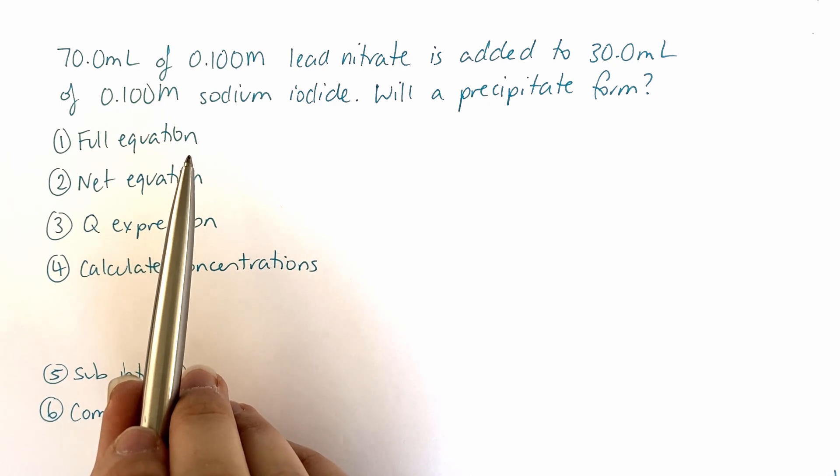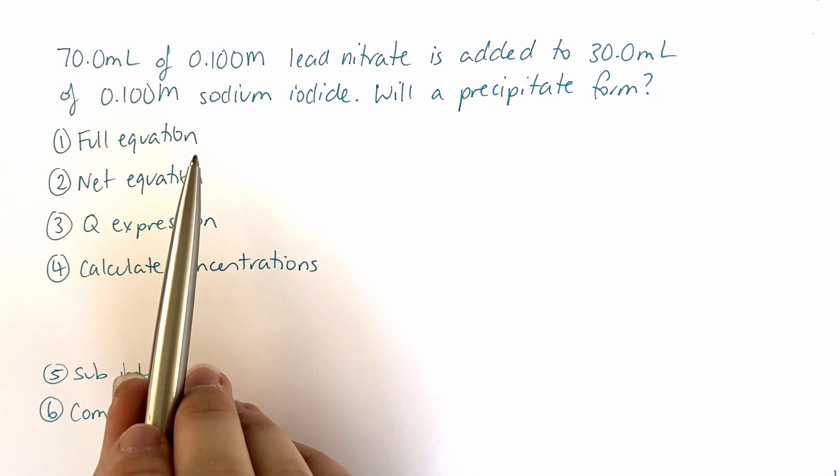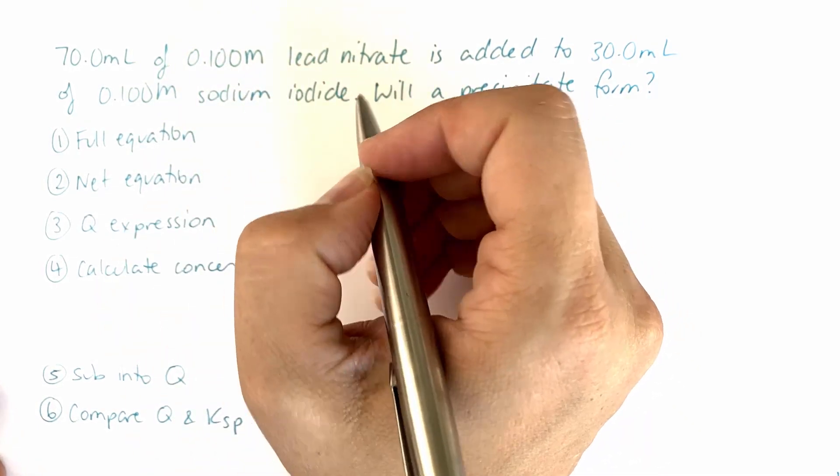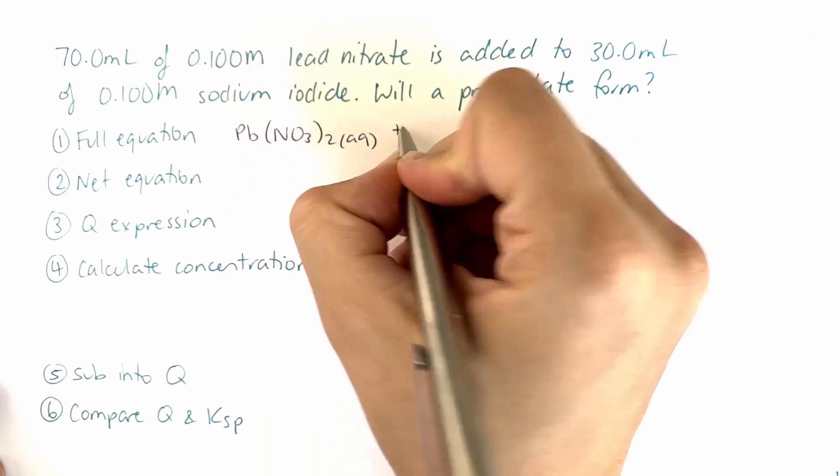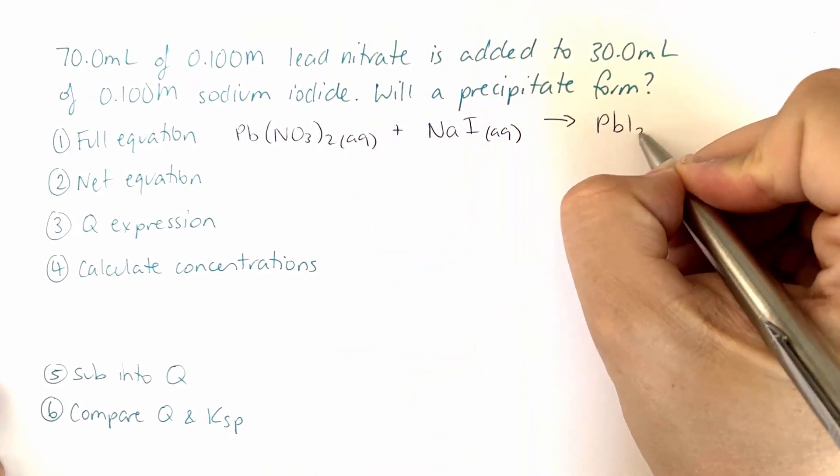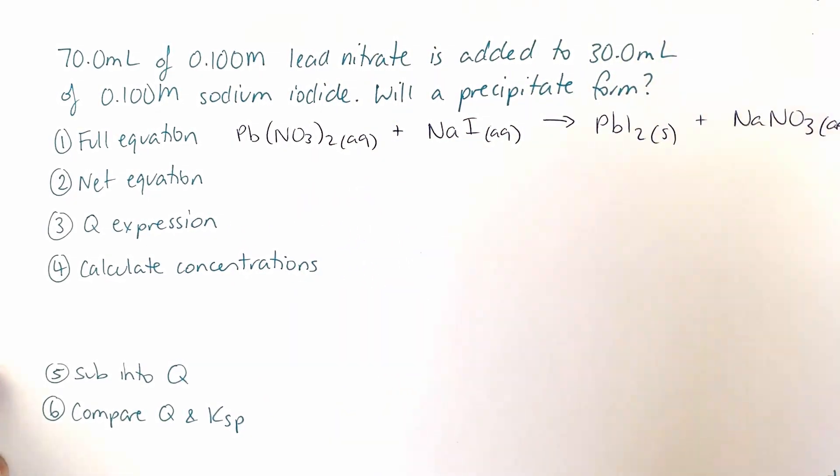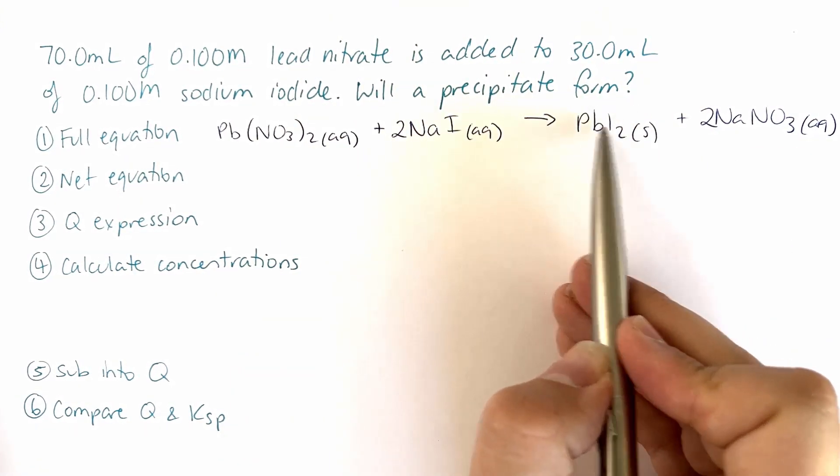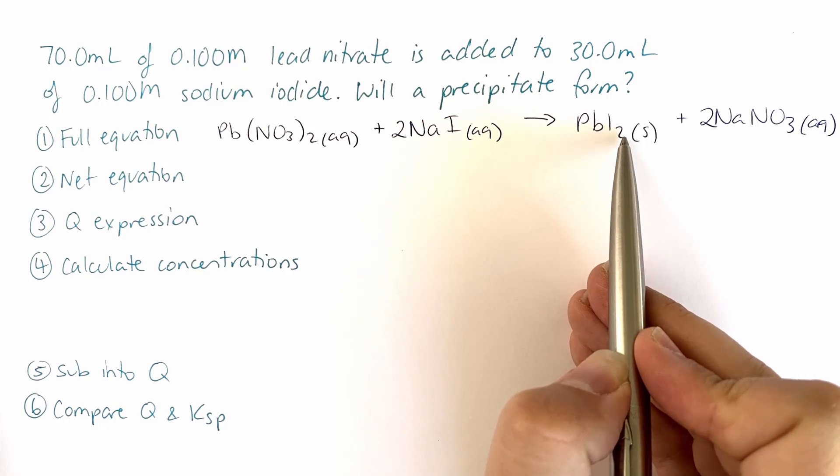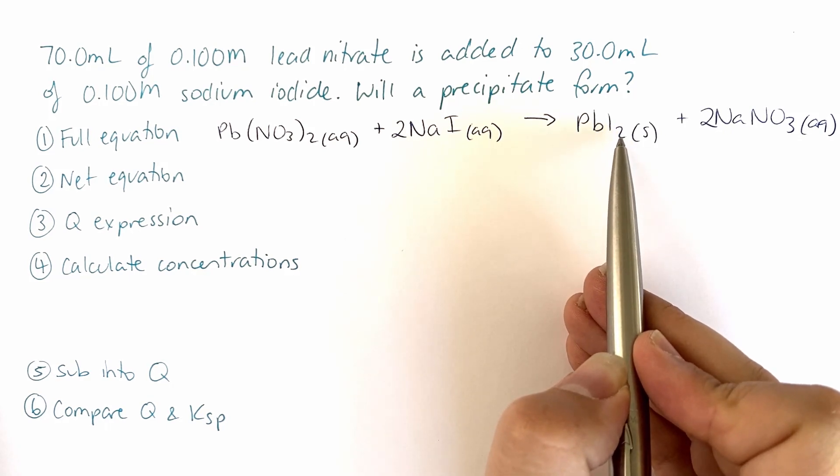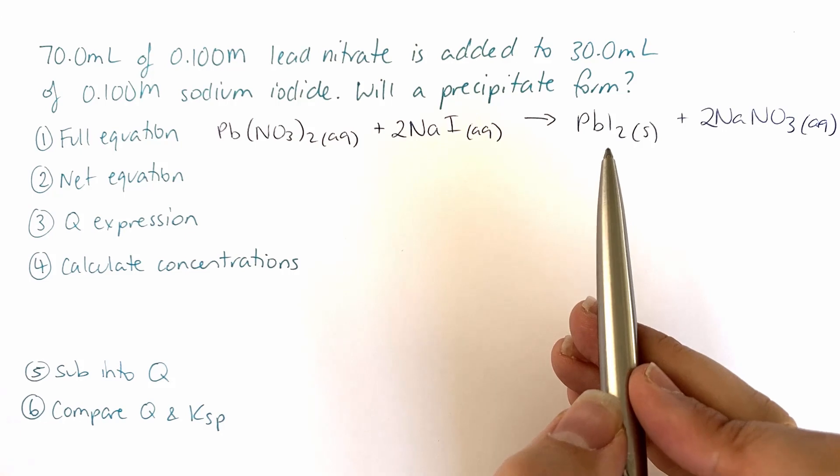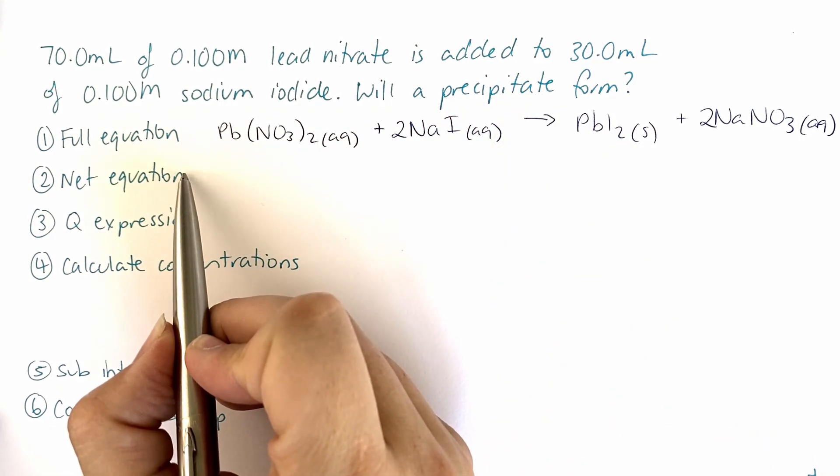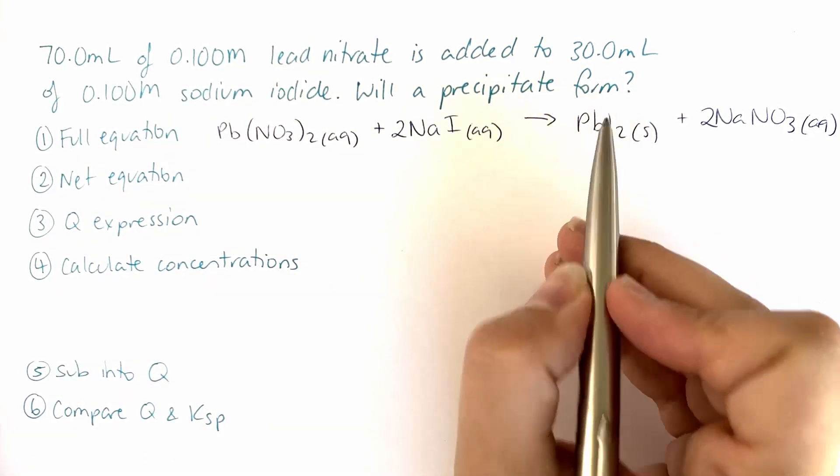So we start with our lead nitrate and our sodium iodide. Using your solubility rules you'll be able to see that the lead iodide is what forms our precipitate. If you've done the prac on this then you'll know that this is that really awesome yellow color precipitate that's formed. So our net equation is going to be our lead iodide breakdown.